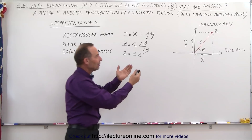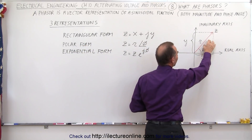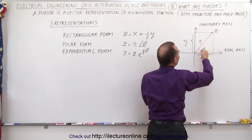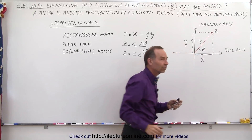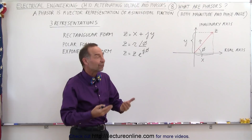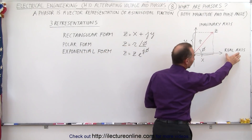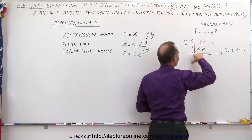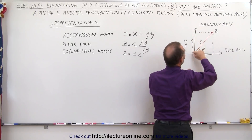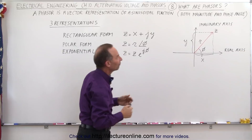Here we have a graphical representation. The red vector represents a phasor. The length of it is the magnitude, and then we have the phase angle relative to the horizontal axis, which we use to represent the positive cosine function of a sinusoidal function. We're going to call the horizontal axis the real axis and the vertical axis the imaginary axis. The vector has an x and a y component, which represents the phasor.